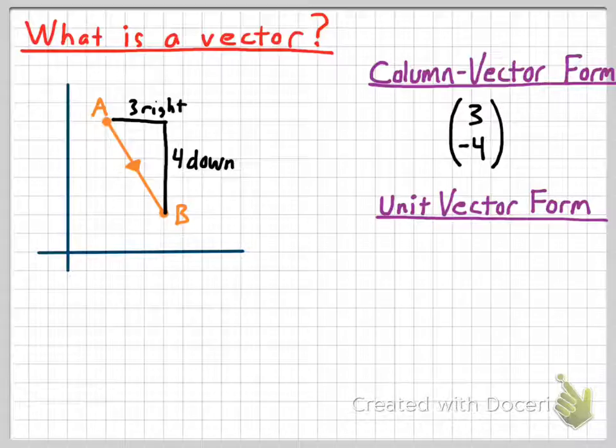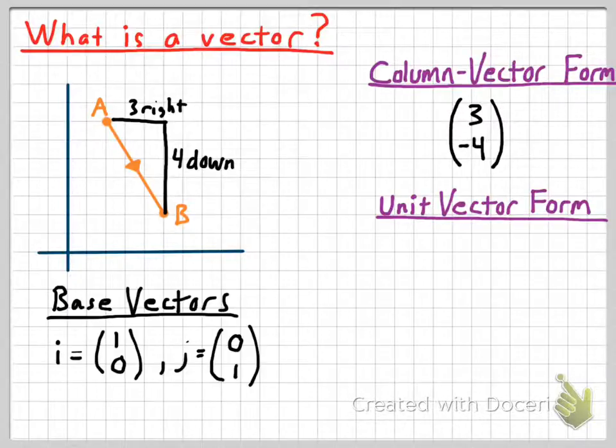All right, then for the unit vector form, I need to add some information to your screen real quick. You saw I wrote something about what are called base vectors down here, and I'll come back to that. A unit vector is simply a vector that is one unit long, just like a unit circle has a radius of one. A unit vector is one unit long. Because remember, vectors have size and direction, that's the size.